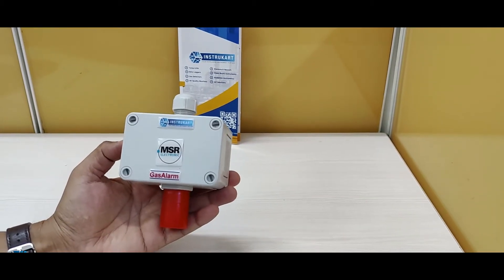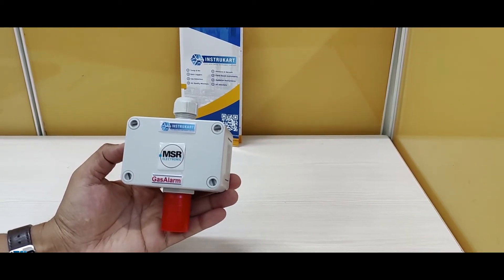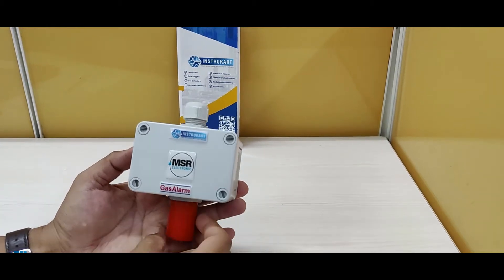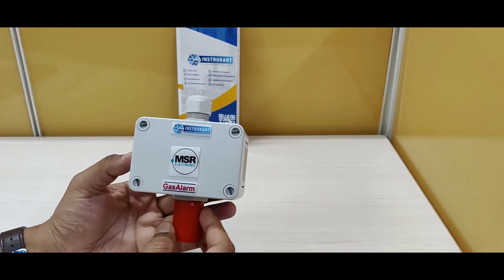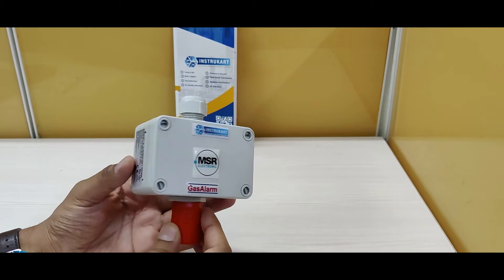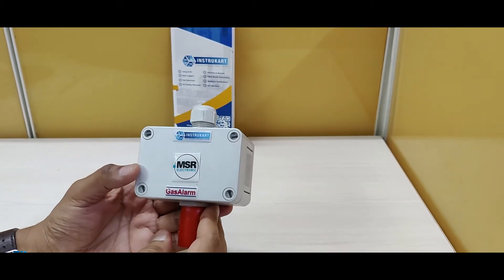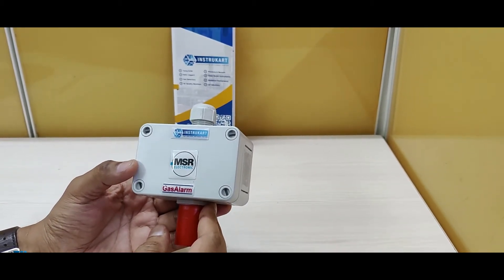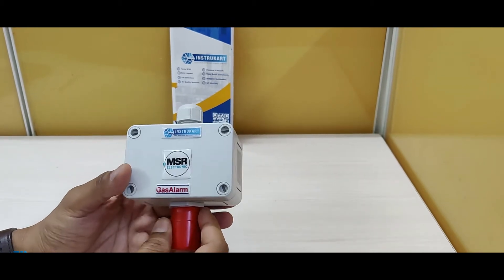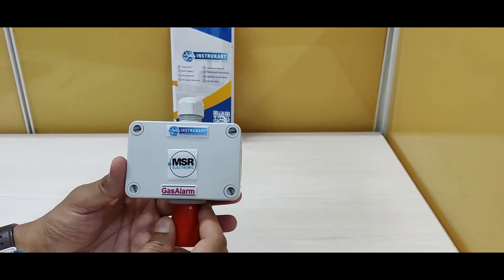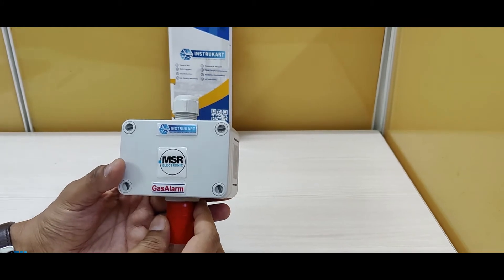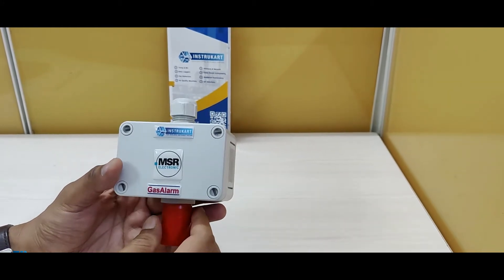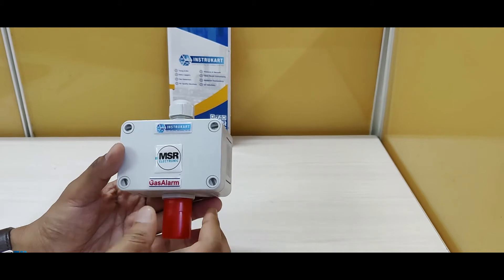Hello and welcome to Instrukart Holdings, your worldwide instrument partner. We have an ethylene measuring device from MSR Electronic. This device detects the ethylene level in various applications, the primary application being food ripening where you need to check how much the food is ripened or the citrus level of that particular food.